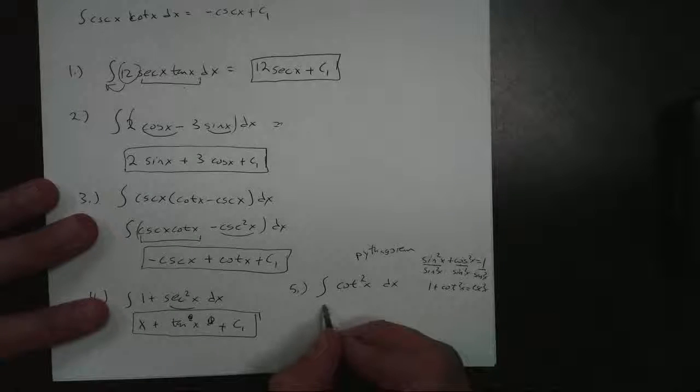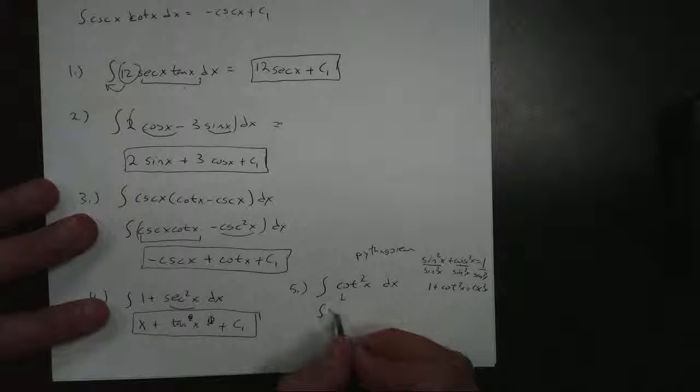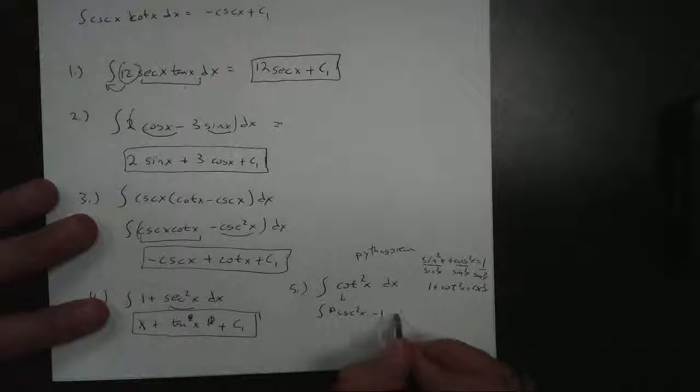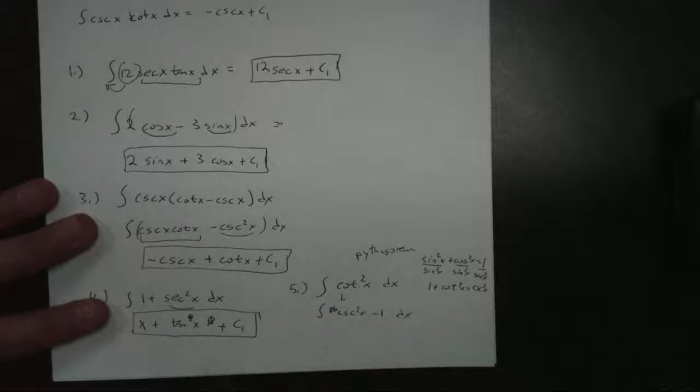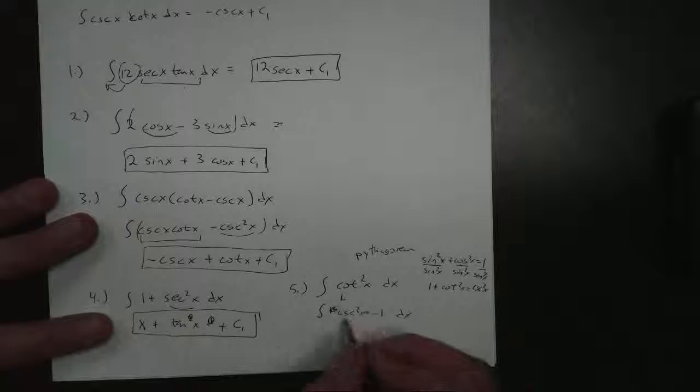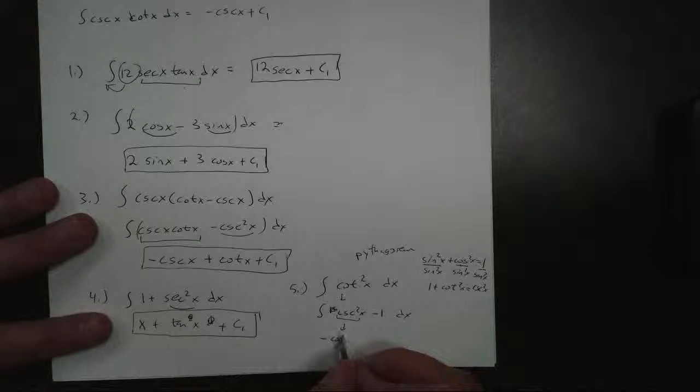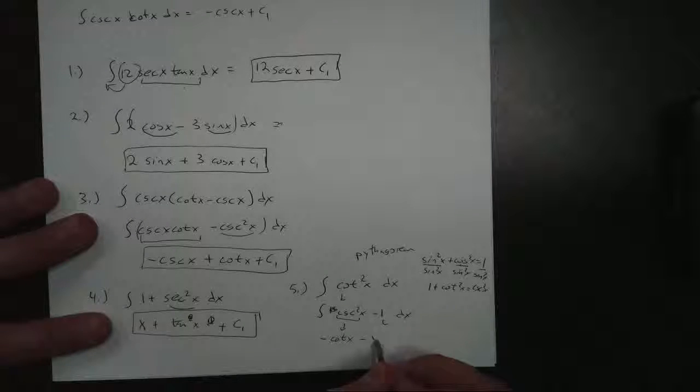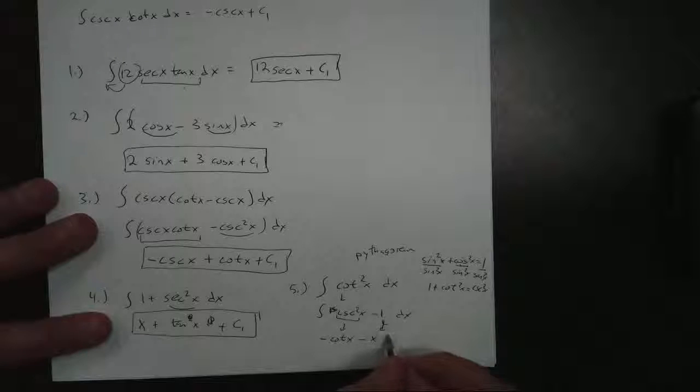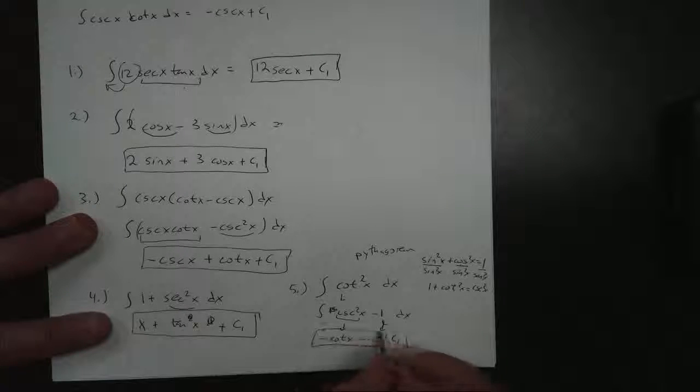And that gives me 1 plus the cotangent squared of x equals cosecant squared of x. And it allows me to replace this. I can replace cotangent squared with cosecant squared of x minus 1 dx. I can just replace it. And I know this: its antiderivative is negative cotangent of x minus x plus c1. And there's my antiderivative.